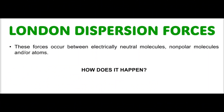Since our today's topic is London dispersion forces, let's focus mostly on them. These forces occur between electrically neutral, non-polar molecules and atoms. They can be between two molecules, two atoms, or a molecule and an atom — but all of which are electrically neutral, not electrically charged. But how is it possible? If there are no charges, how do these interactions occur?